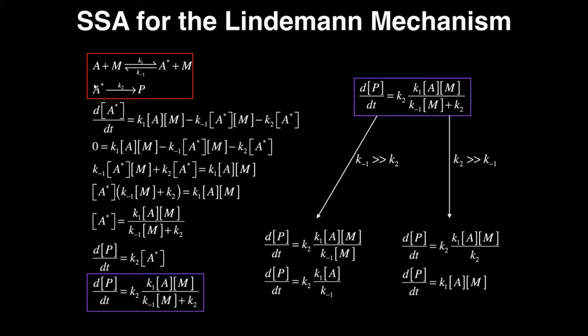First of all, here's the reaction of the Lindemann mechanism, and basically it's really just using steady state approximation in the derivation, but it's a little bit different than other reactions. We have A, which is a reactant, plus M, some other reactant. Sometimes this M can also be an A. It just has to be two things colliding. A and M are in equilibrium with this A star and M.